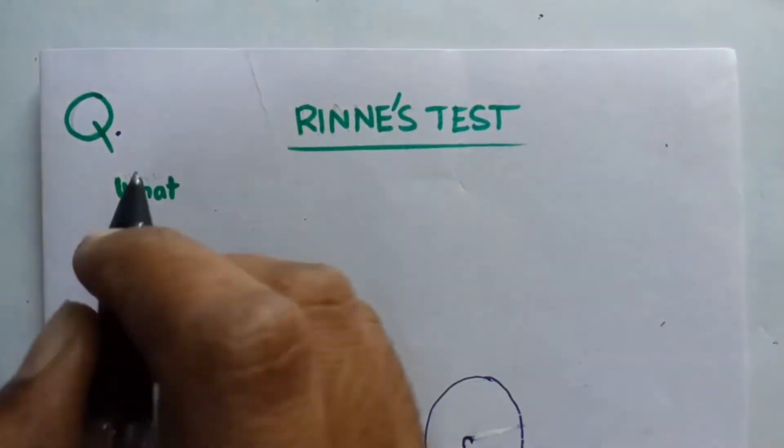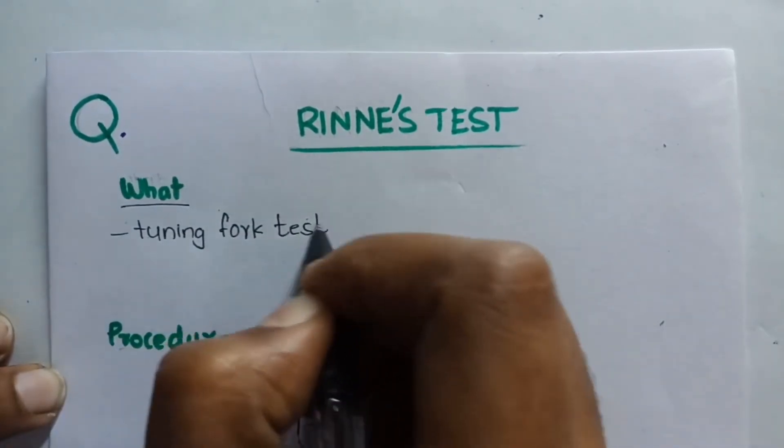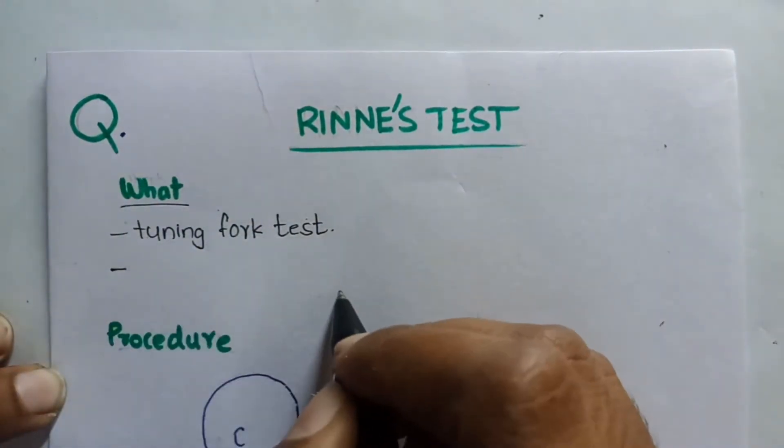Rinne's test - first of all, what is it? It is a type of tuning fork test among the Rinne's, Weber's, ABC, and so on.